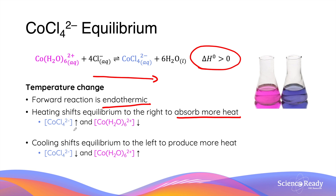The movement of equilibrium to the right hand side will increase the concentration of dehydrated cobalt chloride and decrease the concentration of hydrated cobalt ions. So combining the effects of the colours and the concentrations, heating will allow the solution to become more blue.